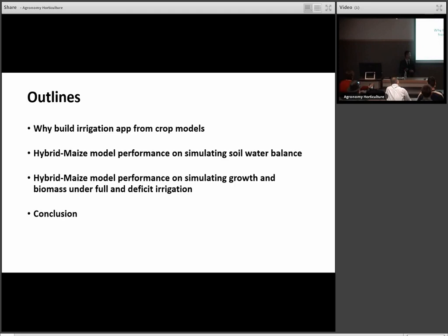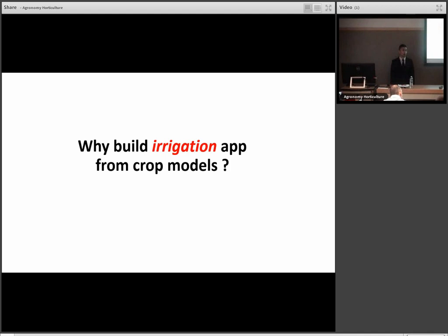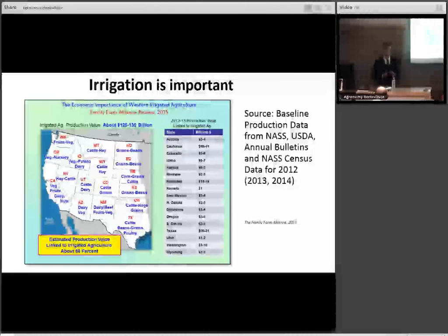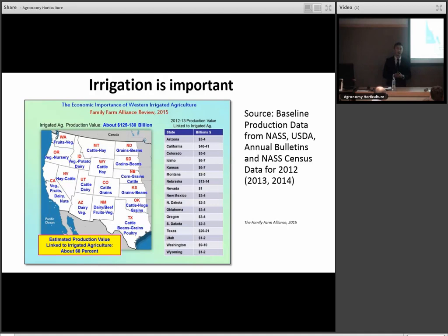So why build an irrigation app from crop models? Because irrigation is very important in U.S. agriculture. If you look at the western region, annually there's about $125 to $130 billion related to irrigation agriculture. That's about 68% of total agriculture-related production, which is pretty big. And when we look at Nebraska specifically, every year irrigation-related agriculture generates revenue of about $13 to $14 billion solely in Nebraska. So irrigation is very important in Nebraska.